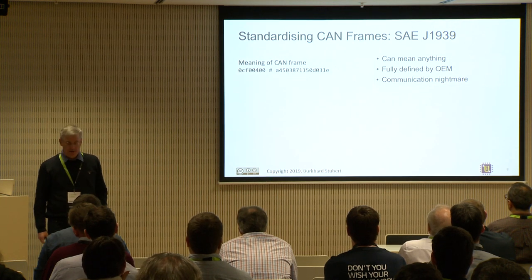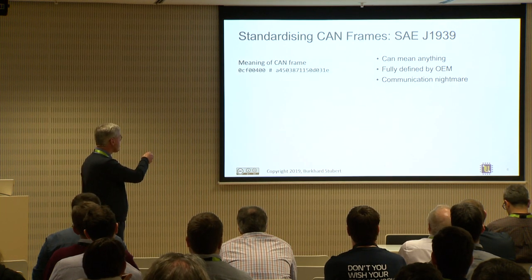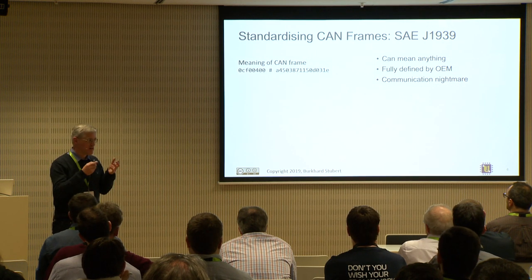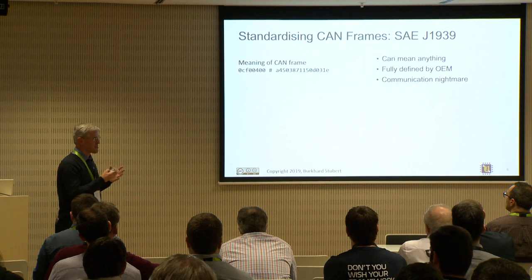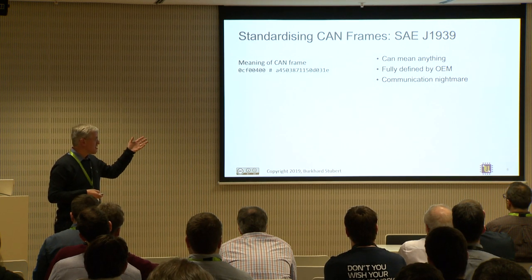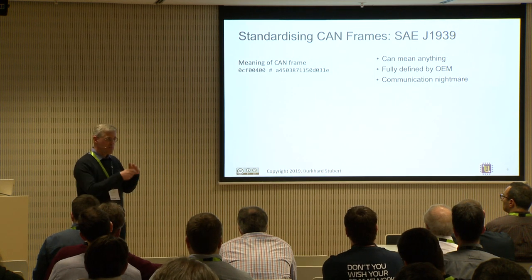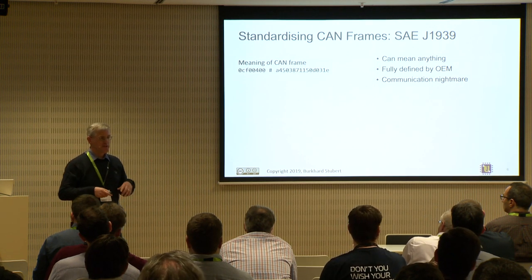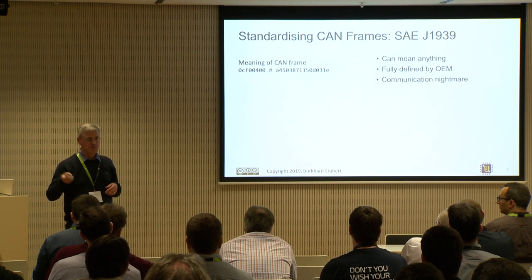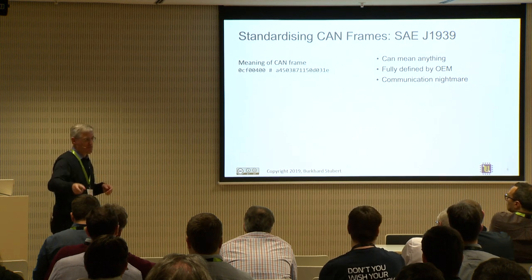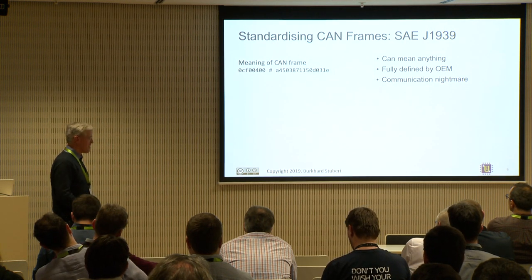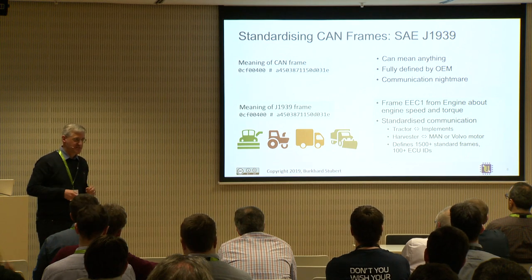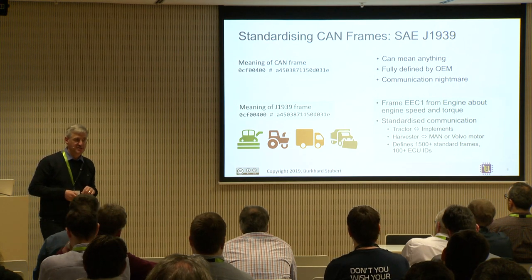A raw CAN frame can mean anything unless someone defines its meaning. Initially every manufacturer assigned their own meaning, making interoperability between, say, a tractor and a seeder impossible — a communication nightmare. The solution was standardization. This is where the J1939 standard comes in: it gives meaning to CAN bus frames, enabling a John Deere tractor to talk to a Case New Holland seeder, or swapping engine brands like MAN to Volvo.